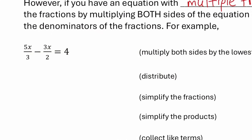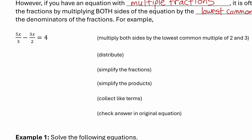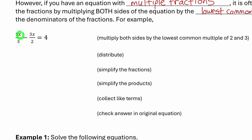For example, if we look at this equation: 5x over 3 minus 3x over 2 equals 4, and I have to solve for what value of x makes the equation true. Because I have two fractions where the denominators are 3 and 2, I need to multiply both sides of the equation by the lowest common multiple of 3 and 2.